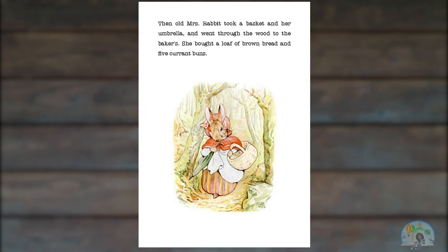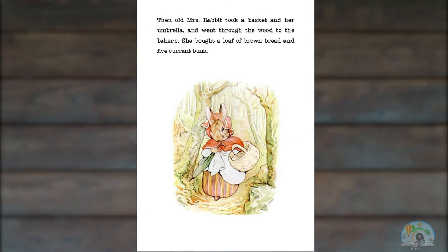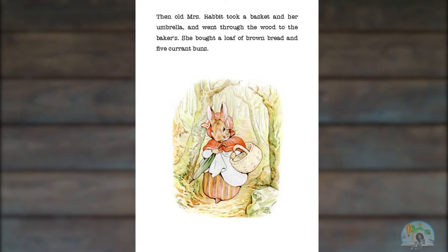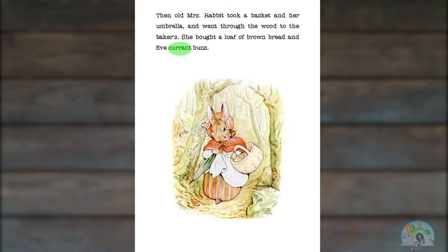Then old Mrs. Rabbit took a basket and her umbrella and went through the wood to the baker's. She bought a loaf of brown bread and five currant buns. I'm not quite sure what the word currant means. And when I look in the picture, I don't see any clues to help me out. But I do know that Mrs. Rabbit is buying bread, and buns are a type of bread, usually a sweet type. So I'm thinking currant is a food that you put into a bun, maybe like a raisin or a berry. And I do know that rabbits eat berries, so maybe a currant is a type of berry that you can put into a bun.